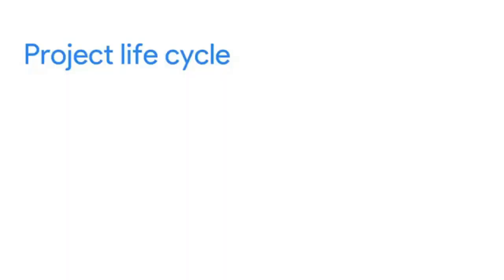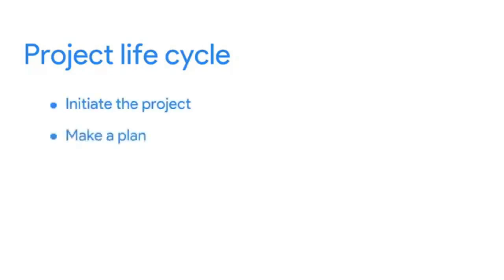The life cycle is a great way to guide your project in the right direction so that you and your project stay on track and end up in the right place. Most project life cycles have four major phases, each with their own set of tasks and concerns. The main phases of a project are: initiate the project, make a plan, execute and complete tasks, and finally close the project.